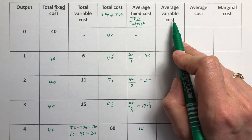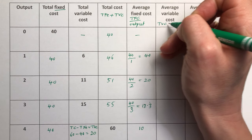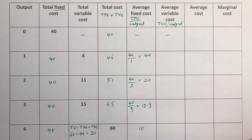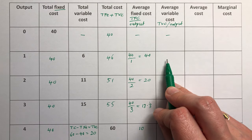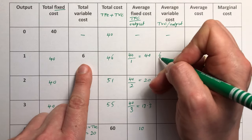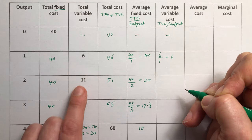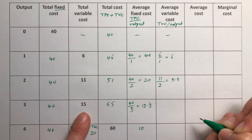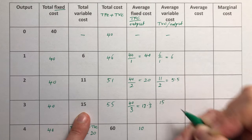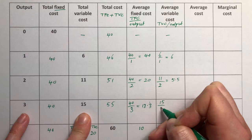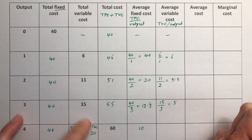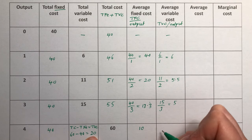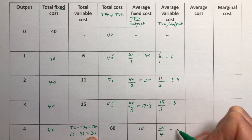Average variable cost is total variable cost divided by output. Again, no units gets a dash. One unit: 6 divided by 1 is 6. Two units: 11 divided by 2 is 5.5. Three units: 15 divided by 3 is 5. Four units: 20 divided by 4 is 5 again.